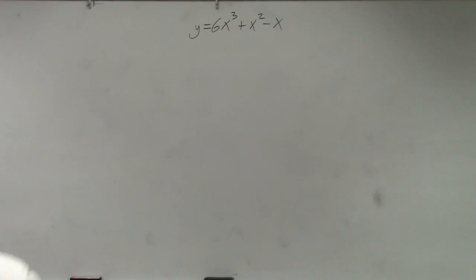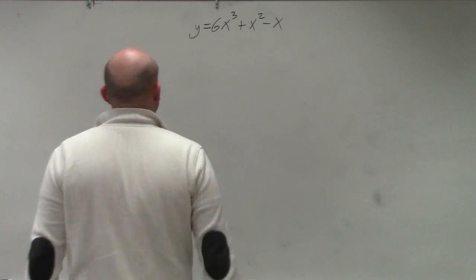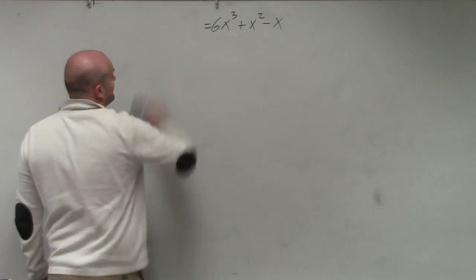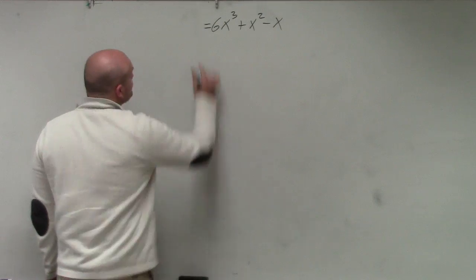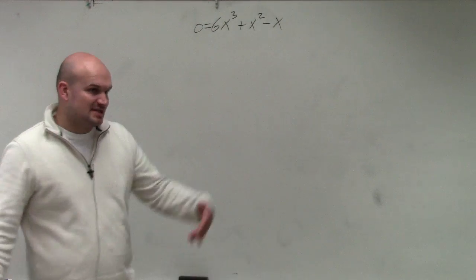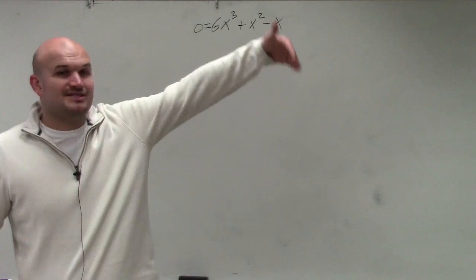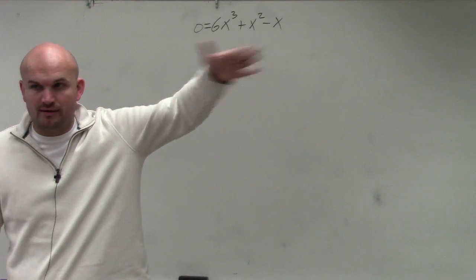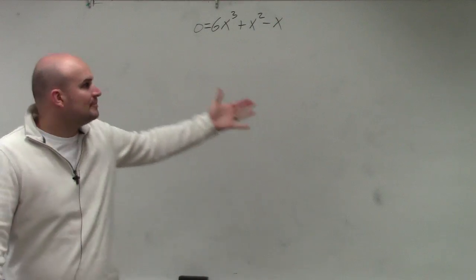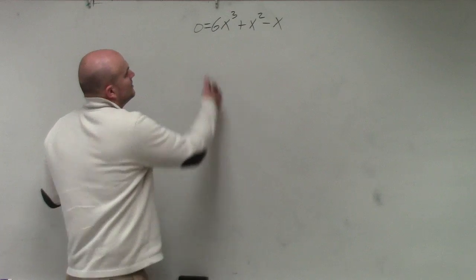The first two steps you're going to do in this problem are exactly the same. You're going to replace your y with 0. Because to factor this, since we have more than one variable and the variable is raised to a higher power than 1, we're going to have to factor them.